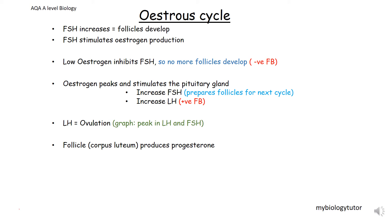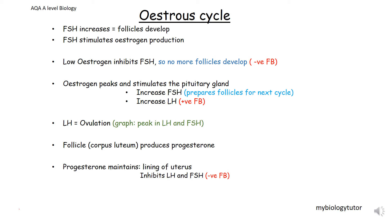The progesterone is important for two reasons: it maintains the lining of the uterus if a pregnancy is to occur, and it also inhibits LH and FSH, which stops another egg being released if the female has got pregnant. If no pregnancy occurs, the progesterone levels fall and the cycle continues round.